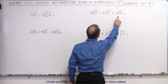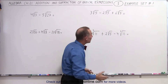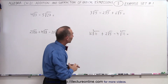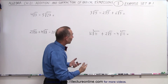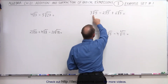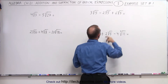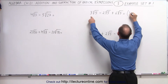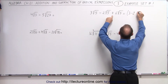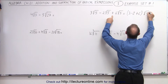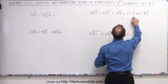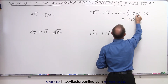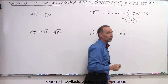Notice that they're all the square root, which means their index is the same. And notice the radicand is the same — all of them have a 5 underneath the radical sign. So we can simply add and subtract them. We have 3 of these, minus 2 of those, plus 6 of those. We can factor out the square root of 5, giving us 3 minus 2 plus 6, times the square root of 5. That's 1 plus 6, which is 7 times the square root of 5 — the final simplified result.